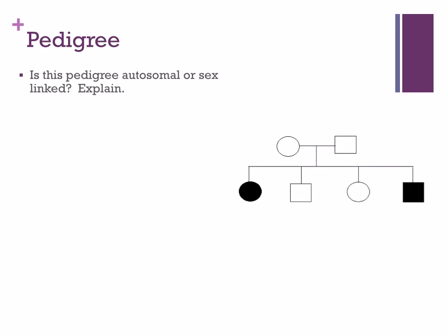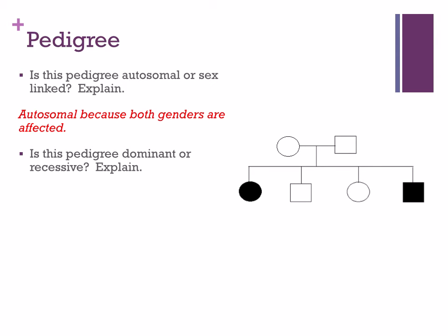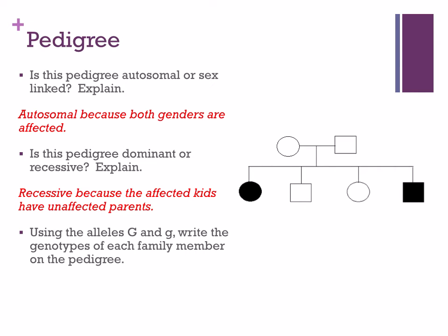In the next pedigree, is this autosomal or sex-linked? I see a female and a male that are affected, so it's autosomal since both genders are affected — no X's and Y's needed in the genotypes. Is this dominant or recessive? The affected girl and boy — looking up a generation — their parents are normal. Since affected kids have unaffected parents, it should be recessive. People who are affected should be homozygous recessive.